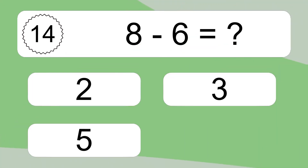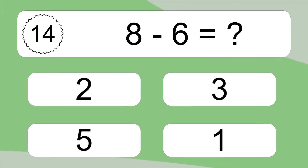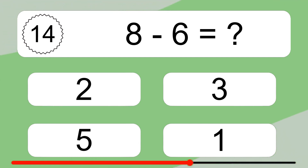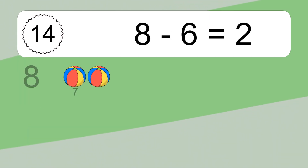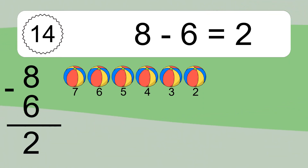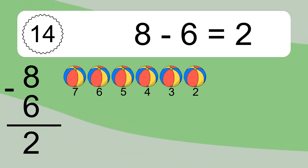8 minus 6 equals what? 8 minus 6 equals 2. Let's count it. 7, 6, 5, 4, 3, 2.